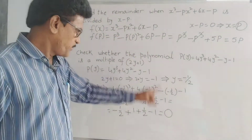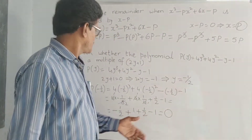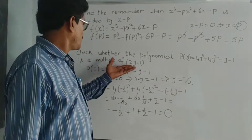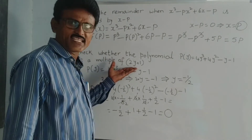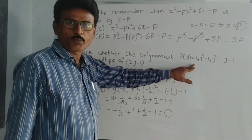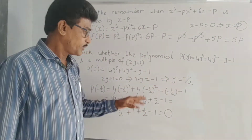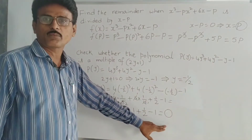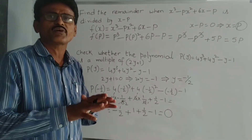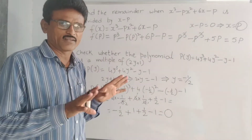Remainder is 0 means the given linear polynomial is a factor of the cubic polynomial. So depending upon the remainder, we can say whether it is a factor or not.